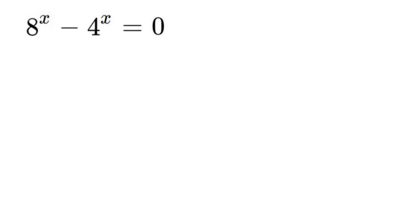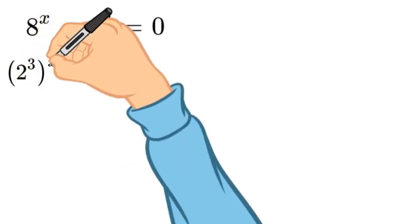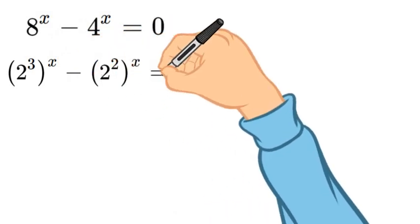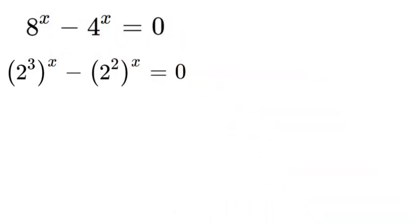So the first step is we're going to rewrite 8 and 4 so that it is 2 to a power. So 8 would be 2 to the power of 3 to the x and then 4 would be 2 to the power of 2 to the x which equals 0.